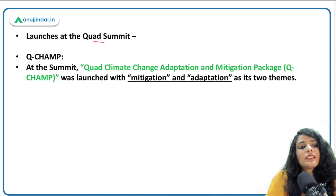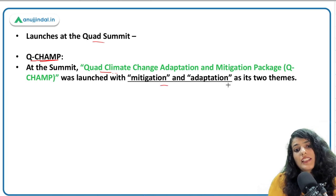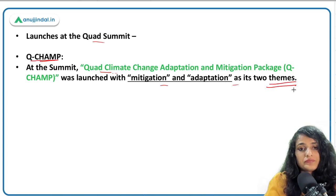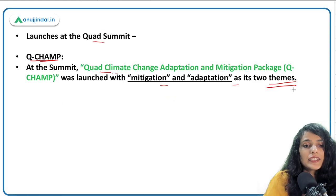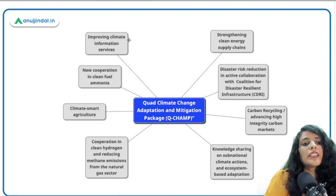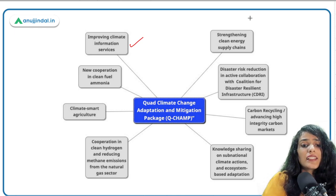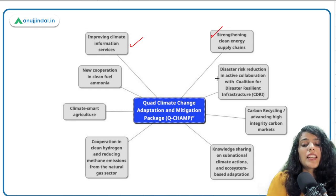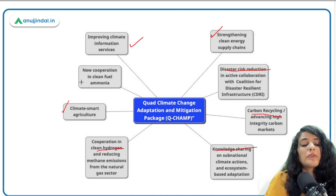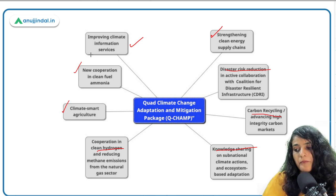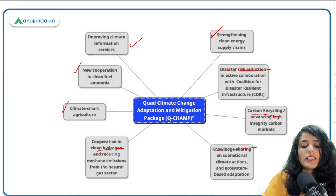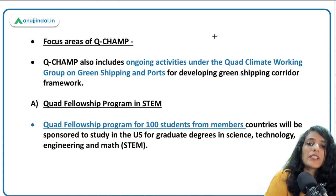At the Quad Summit, Q-CHAMP — Climate Change Action and Mitigation Package — was launched with mitigation and adaptation as its two themes. Key initiatives under Q-CHAMP include: strengthening clean energy supply chains, disaster risk reduction, carbon recycling, knowledge sharing and cooperation, clean hydrogen, climate-smart agriculture, and clean fuel ammonia.